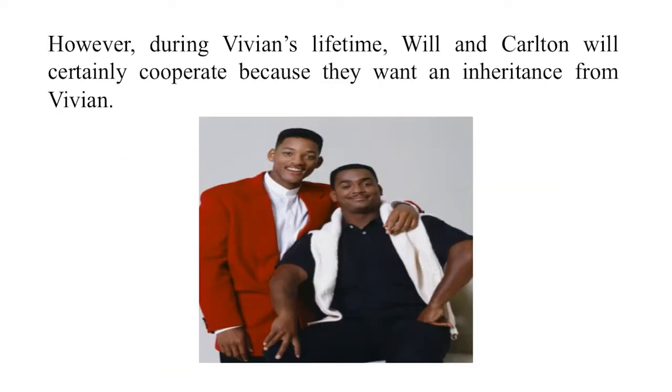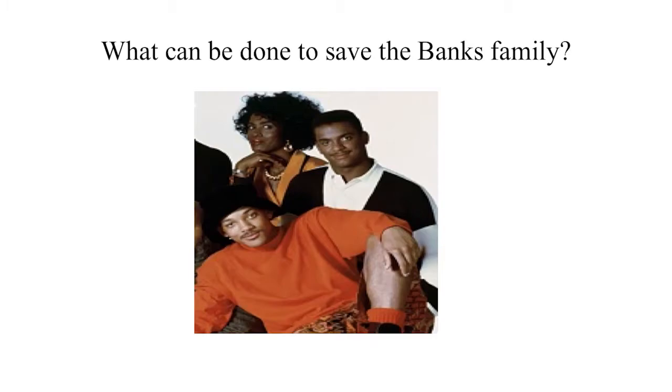However, while mom's still alive, kids tend to cooperate. In this situation, Will and Carlton will pay attention to what Vivian has to say regarding any compromises. So what can be done to save the Banks family? This is a common situation: usually one person generated the wealth, and while dad was alive he made the rules so everybody went along — but now that dad's passed away, the kids can smell the inheritance and conflicts start to develop.